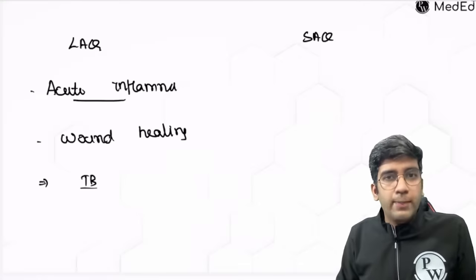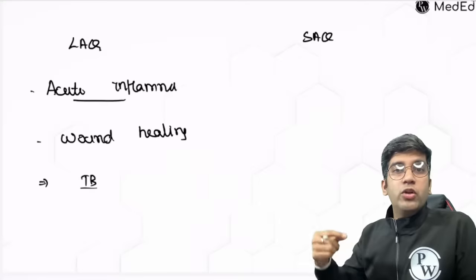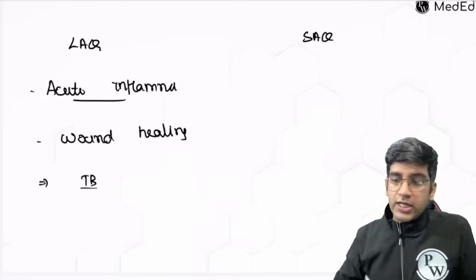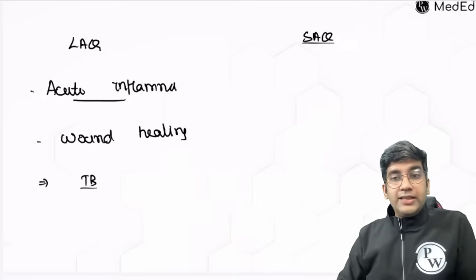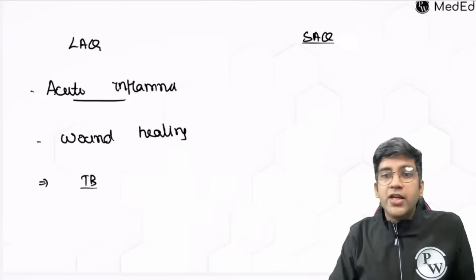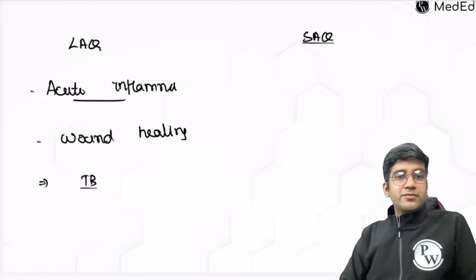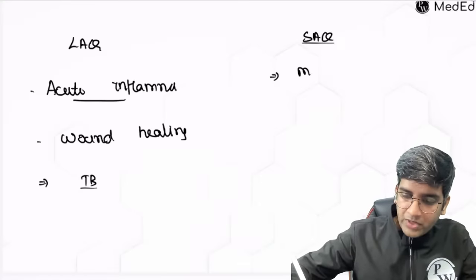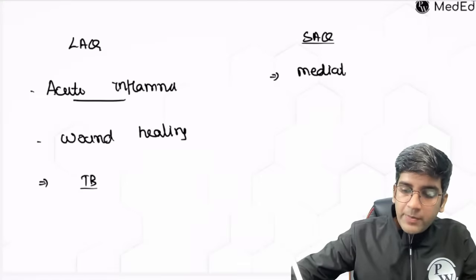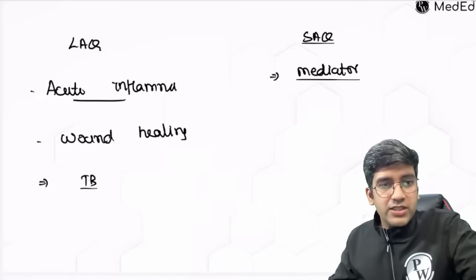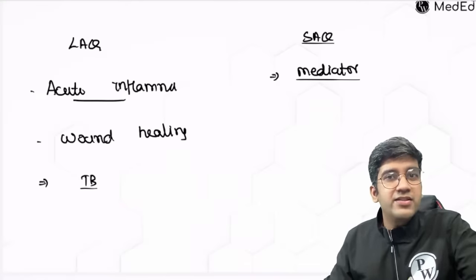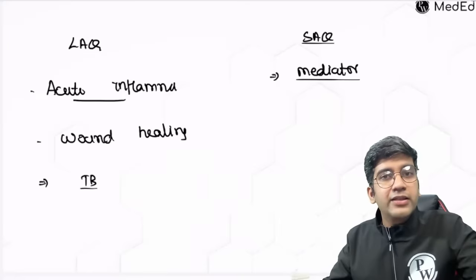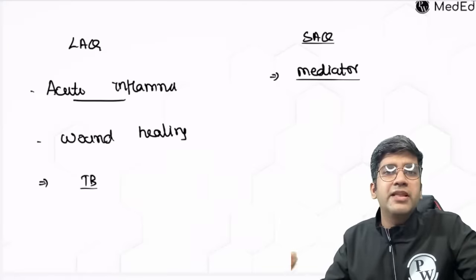We will have a brief discussion on how to approach a case of tuberculosis — what all might be the history you can encounter in a long answer question with respect to tuberculosis. When we come to short answer questions, there are a good amount here. The first thing I want you to remember is mediators of inflammation. Though mediators can come as a long answer, I would prefer it as a short answer because mediators doesn't have any concepts — it's just memorizing. Please remember prostaglandin, leukotriene — that's important. There are multiple questions which can come in that aspect.